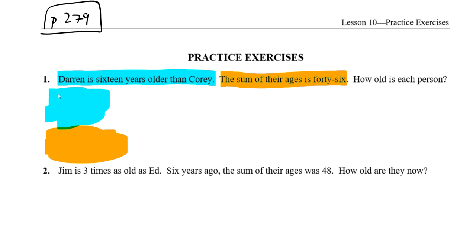We can write out in a couple of ways. We can say Darren's age plus Corey's age equals 46. And we can say that Darren is 16 years older than Corey, so Darren's age is the same as Corey's age plus another 16, or that Corey's age is the same as Darren's minus 16. These two are interchangeable.